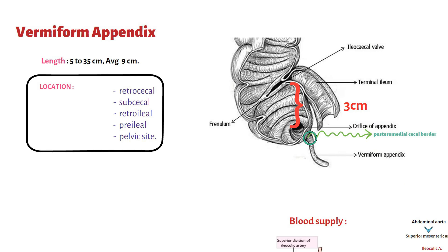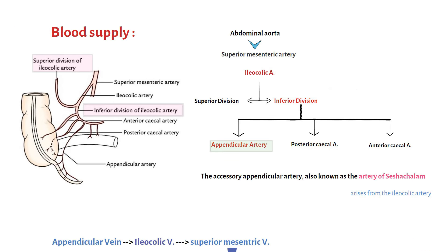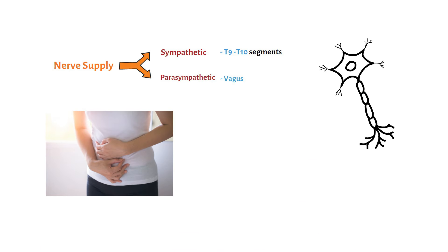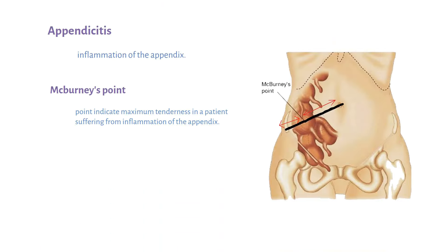Today we discussed the anatomy of the appendix, covering its parts, morphology, blood supply, venous supply, lymphatic drainage, and nerve supply. Thanks for watching this video and stay tuned with Medicos.